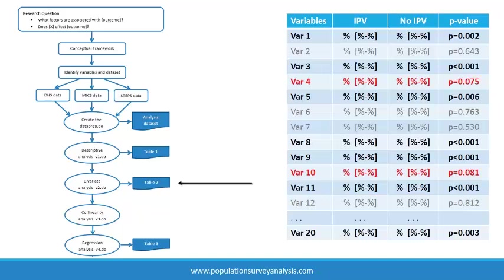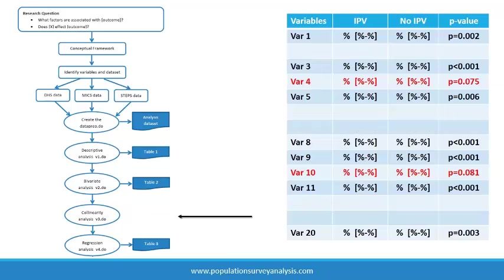Using the same output, we decide to advance all variables that are associated at p less than 0.1 to the next stage of the analysis. In most analyses, we find several variables that are not independently associated with the outcome, so we do not advance them in the analysis workflow.